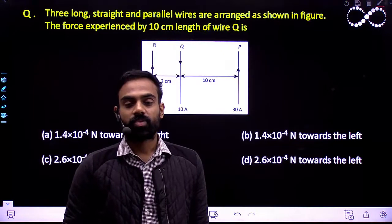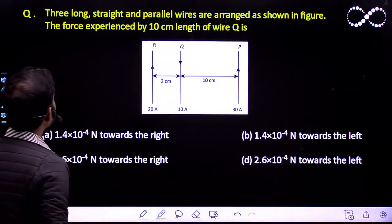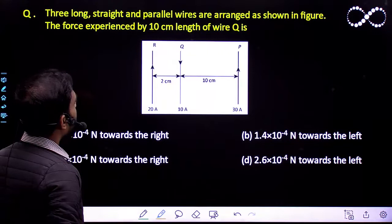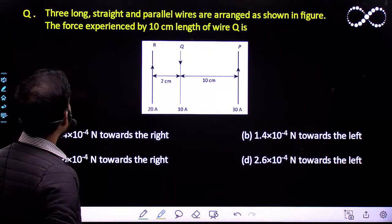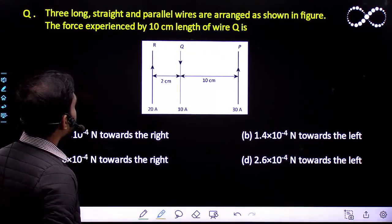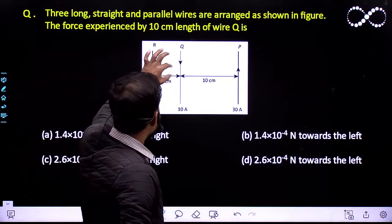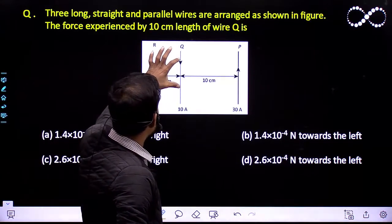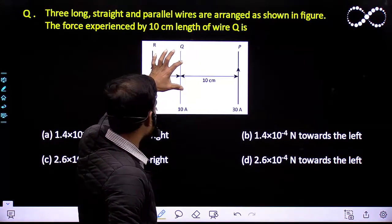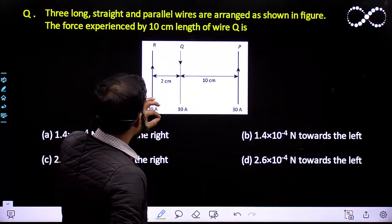Hello students. Let us see this question here. Three long straight and parallel wires are arranged as shown in the figure. The force experienced by a 10 centimeter length of wire Q is what we need to find.